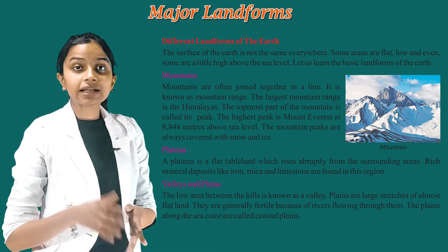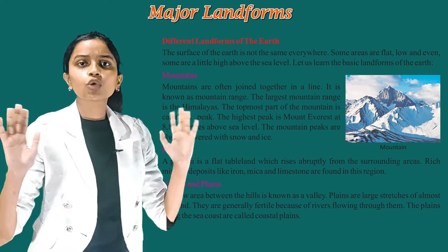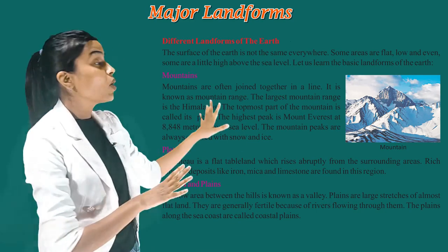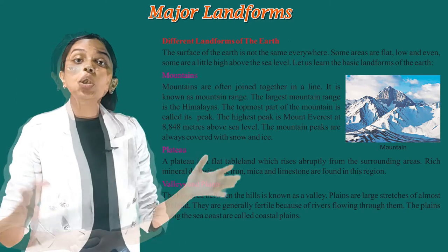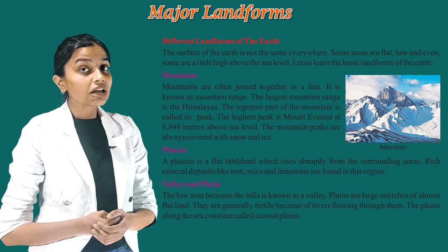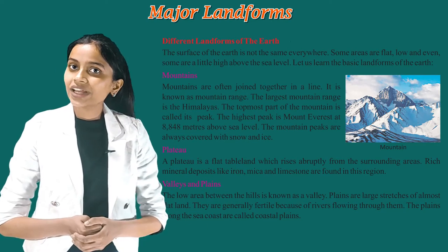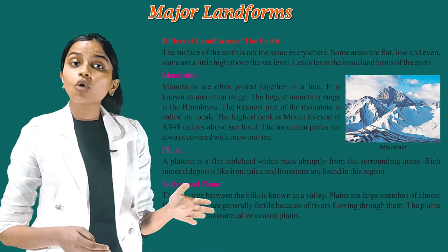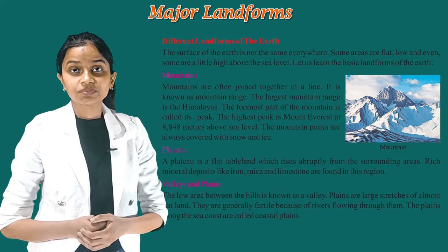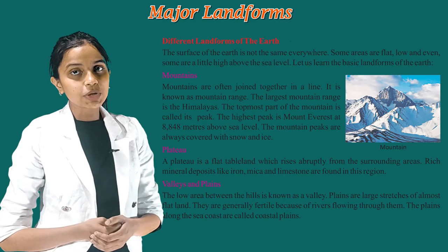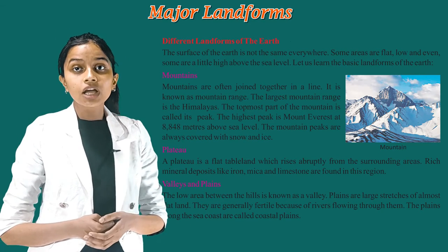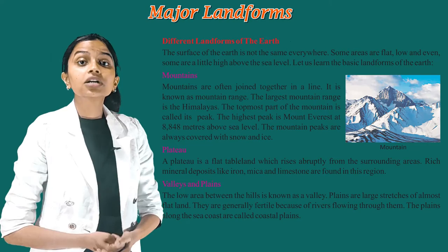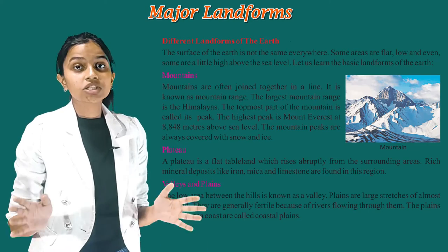Rich mineral deposits like iron, mica, and limestone are found in this region. Valleys and plains: the low area between the hills is known as a valley. Plains are large stretches of almost flat land. They are generally fertile because of rivers flowing through them. The plains along the sea coast are called coastal plains.